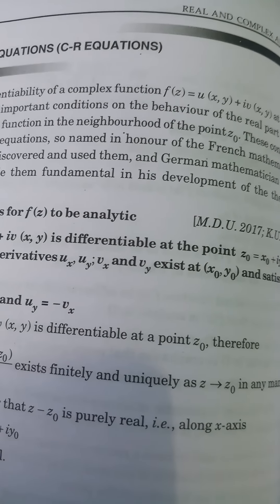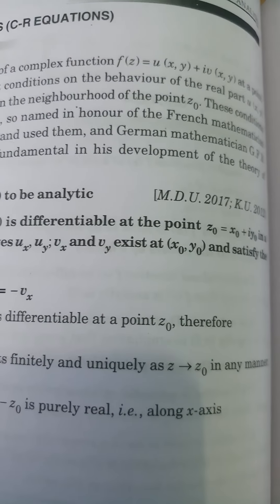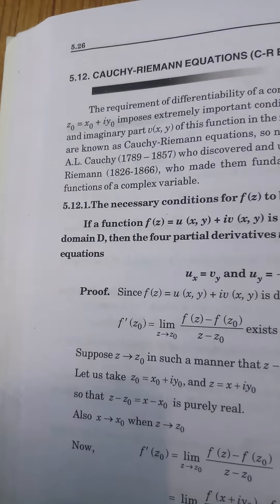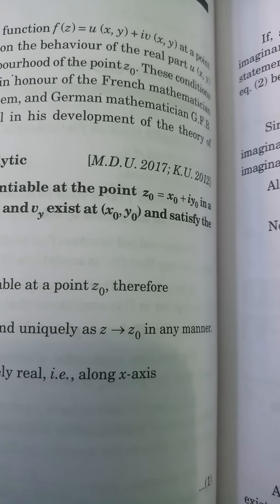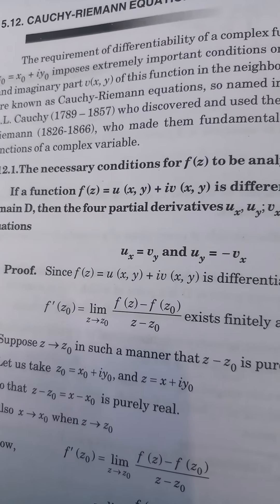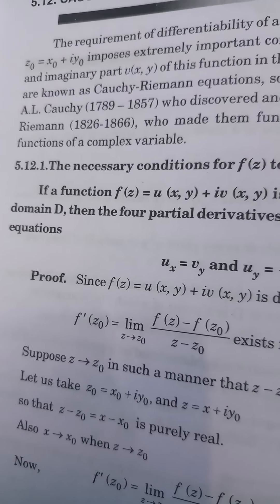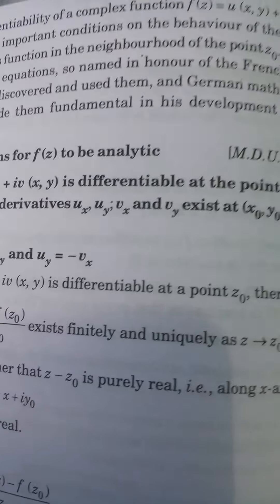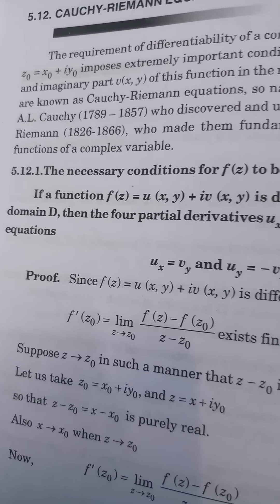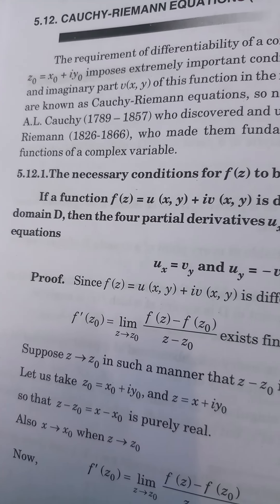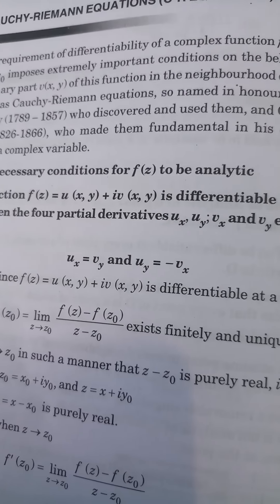The requirement of differentiability of a complex function f(z) = u(x,y) + i·v(x,y) at a point z0 = x0 + i·y0 imposes extremely important conditions on the behavior of the real part u(x,y) and imaginary part v(x,y) in the neighborhood of point z0. These conditions are named in honor of French mathematician A.L. Cauchy (1789–1857), who discovered and used them.